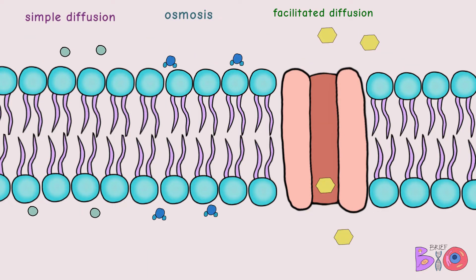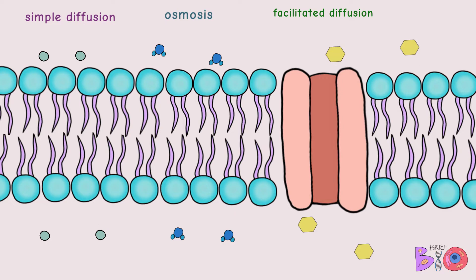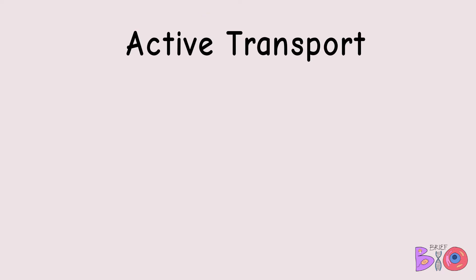Here are all three types side by side. Simple diffusion and osmosis travel directly through the cell membrane, while facilitated diffusion travels through the protein channel.